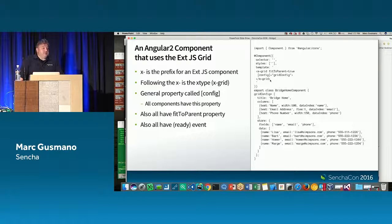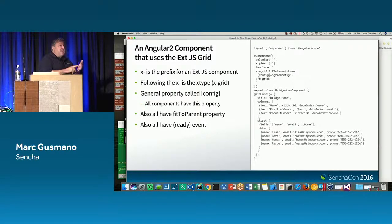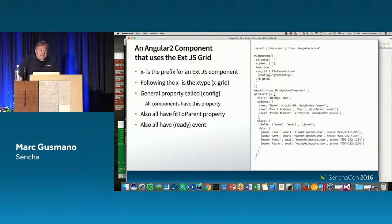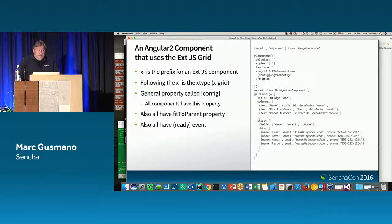There are two ways we made properties available. One way is a single giant 'config' property — every x-type has it, and it can contain basically everything you're used to defining for that x-type. Here's the grid and its config is associated with a 'gridConfig' variable in the class. This should look familiar to anyone who's built a grid: there's a title, a columns array, and a store — in this case an inline store.